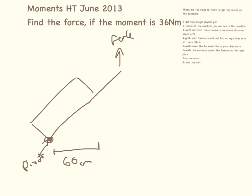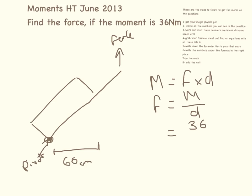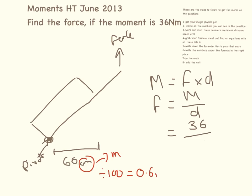Find the force if the moment is 36 Newton meters. This is a higher tier question because it involves rearranging. Moment equals force times distance, which means force equals moment divided by distance. Our moment is 36. The distance is given as 60 centimeters — we need to convert this into meters by dividing by 100, which gives 0.6 meters. So force equals 36 Newton meters divided by 0.6 meters, which equals 60 Newtons.